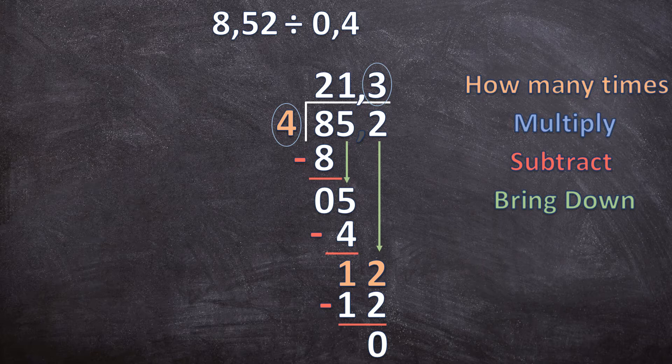This is the end of our long division. Our final answer is 21,3. Remember, when we are dividing a decimal number, we cannot end with a remainder — we need to continue with the long division until we end with a zero. If you're not sure how to do that, make sure you watch all the examples.